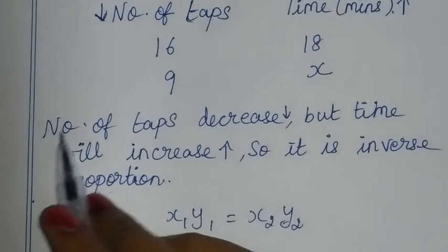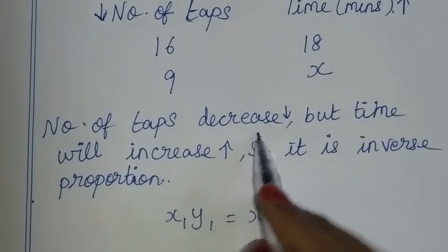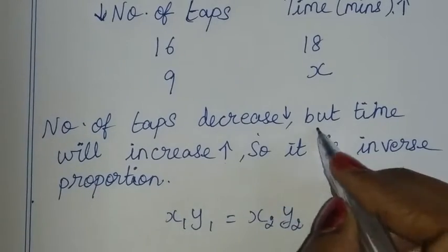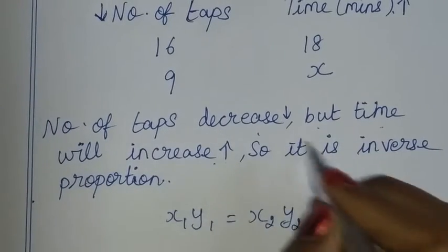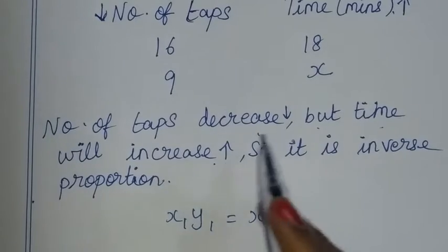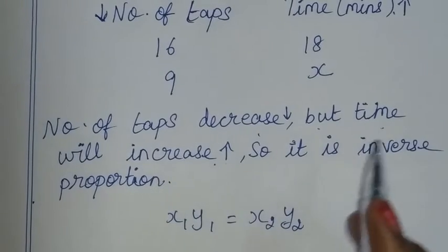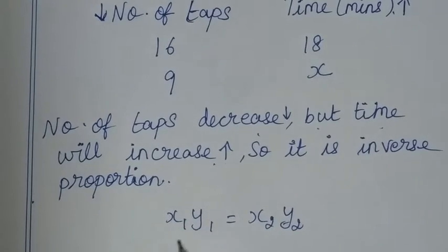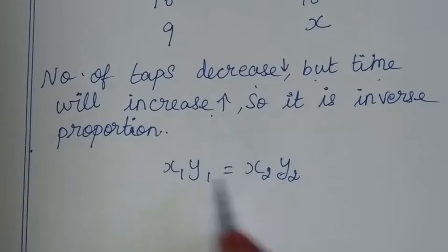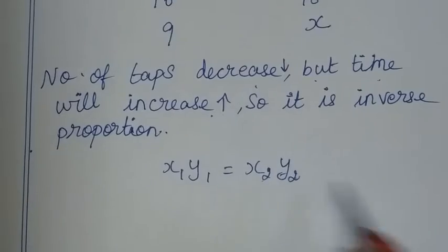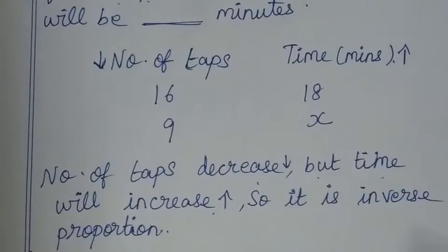The number of taps will decrease but the time will increase. So it is inverse proportion. The formula for inverse proportion is x1·y1 = x2·y2.